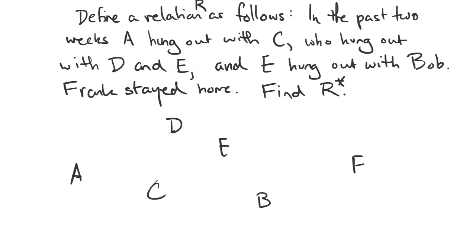So hung out with is a symmetric relation. So every time I draw an arrow, I'm going to draw another arrow pointing the other way. So Alice hung out with Carlos, which means Carlos hung out with Alice. Derek hung out with Carlos, and Carlos hung out with Derek. And likewise with Erica. And then Erica hung out with Bob. Frank hung out with nobody.